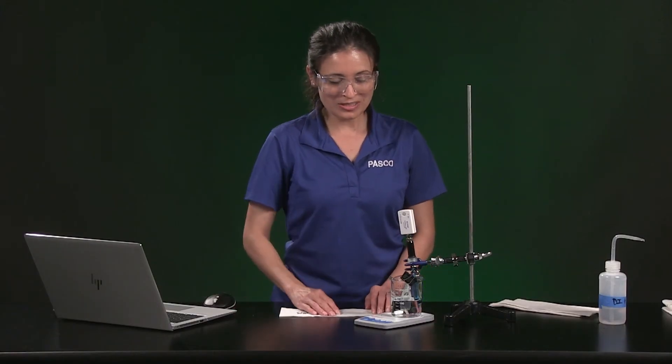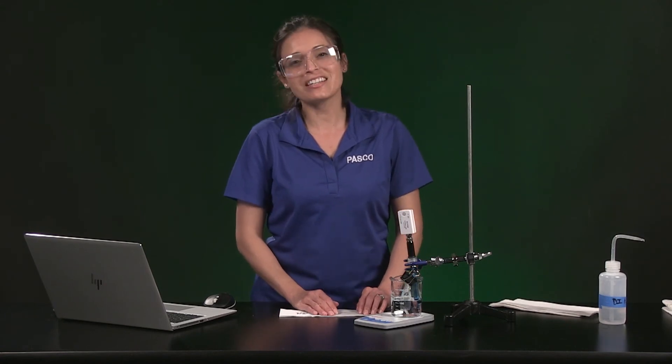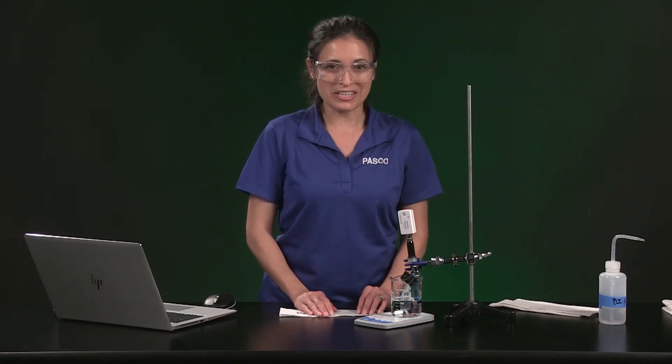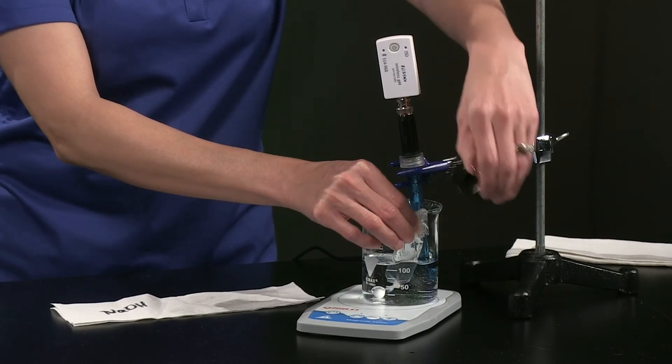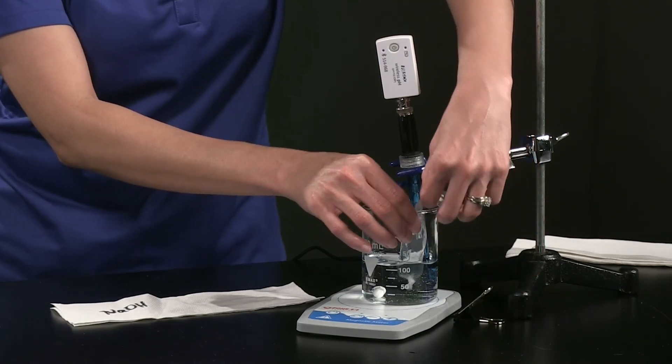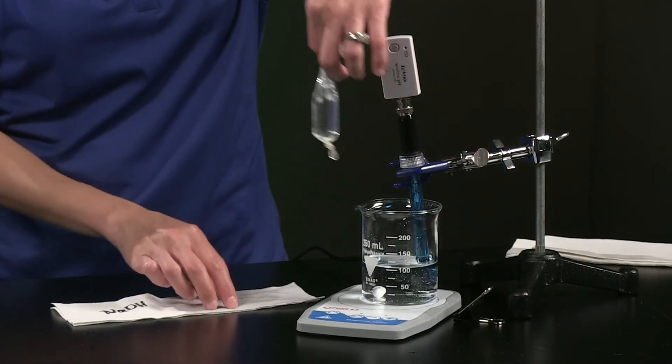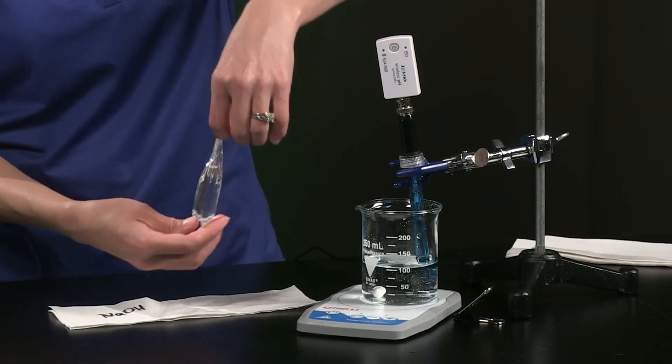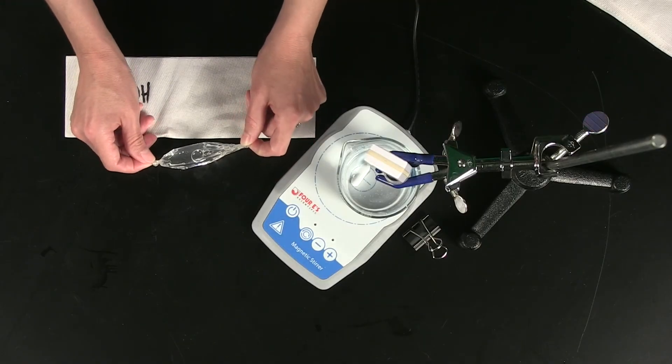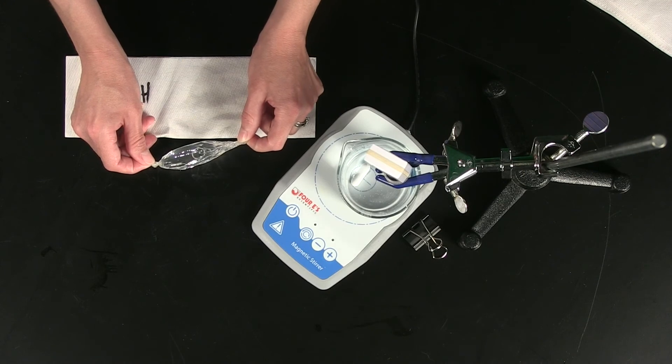I am turning off my stirrer. Now that we have finished data collection, you can make final observations of the solutions in the bag and in the beaker. This is the sodium hydroxide run. Pause the video, record your final observations and resume play when you are finished. Then we will move on to the analysis.